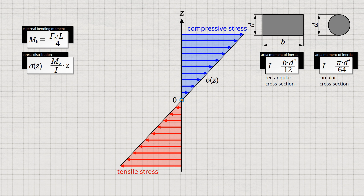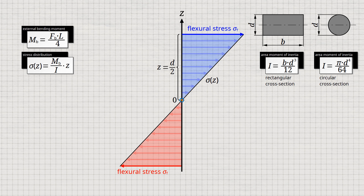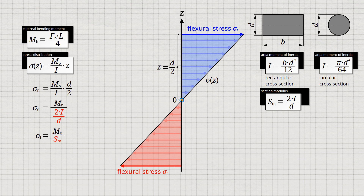Note that the equation describing the stress distribution is only valid if the strains caused in the elastic range are proportional to the induced stresses, resulting in a linear stress distribution — the linear elastic range, where Hooke's law is obeyed. The flexural stresses sigma-f occurring at the material surface can be determined with the derived bending equation. The distance z is equal to half of the total height of the cross-section. The quotient of twice the second area moment and the thickness of the sample is referred to as section modulus, a geometric parameter. For a rectangular or circular cross-section, the section modulus is determined using the shown formulas.